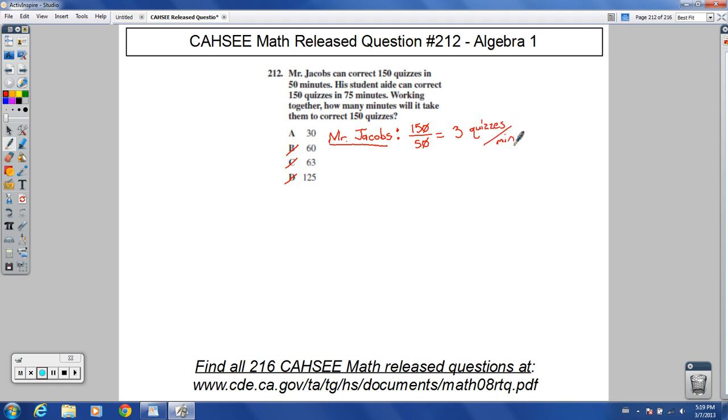The student aid would be doing 150 quizzes in 75 minutes. So how many quizzes per minute is that? Think of money: 75 cents goes into $1.50 two times. That would be 2 quizzes per minute.